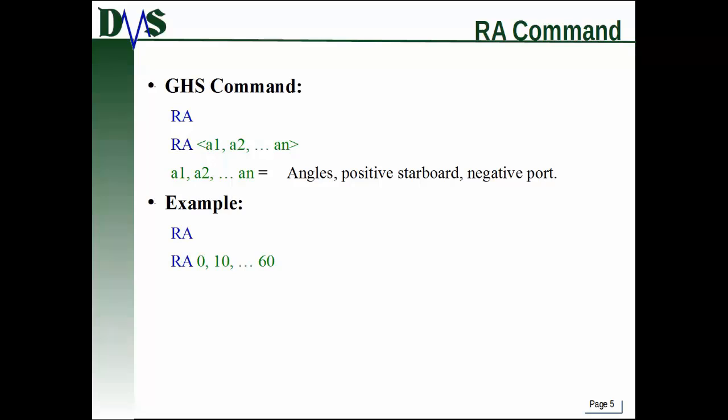There are two modes of operation. If you just type RA on its own, that runs the righting arm command using the predefined angles from the angles command. Or you can put in your own overrides by typing them right after the RA command. For example, just typing RA will produce a GZ curve. Or you can type RA followed by angles of 0, 10, going all the way up to 60 — that's 60 degrees. So those are angles in degrees.